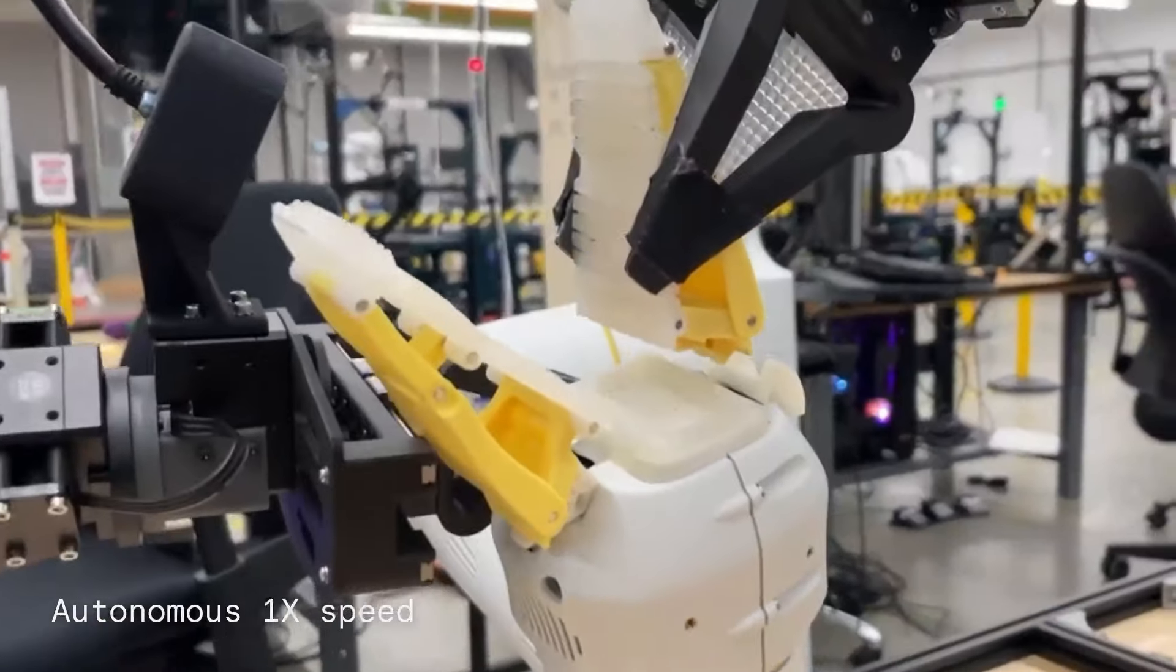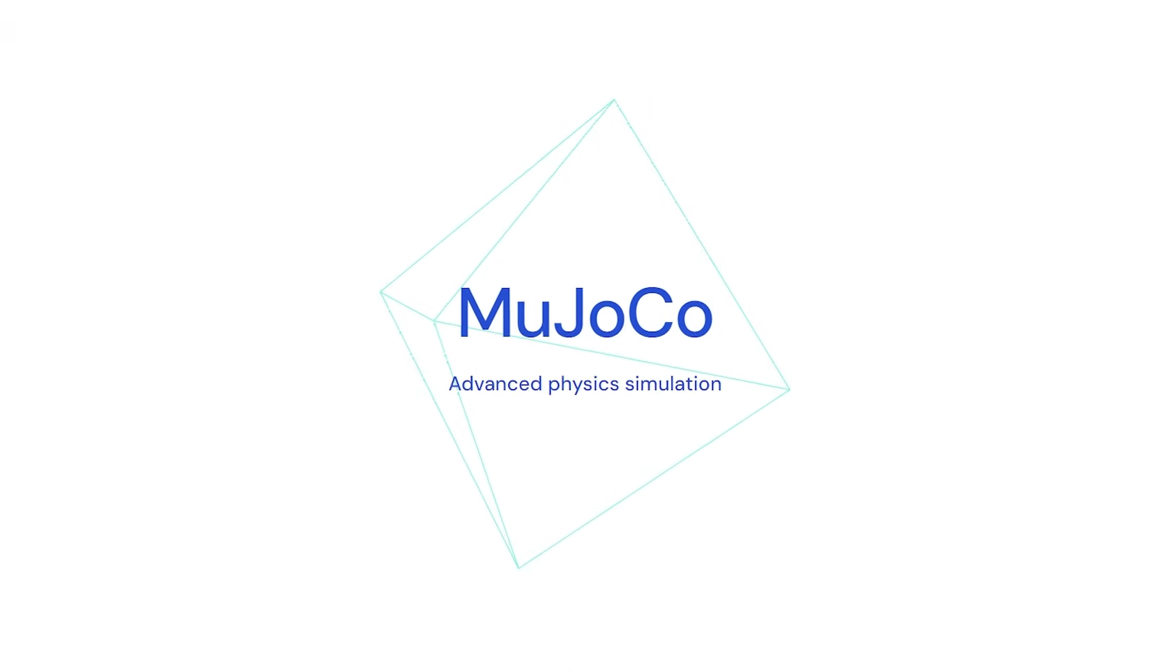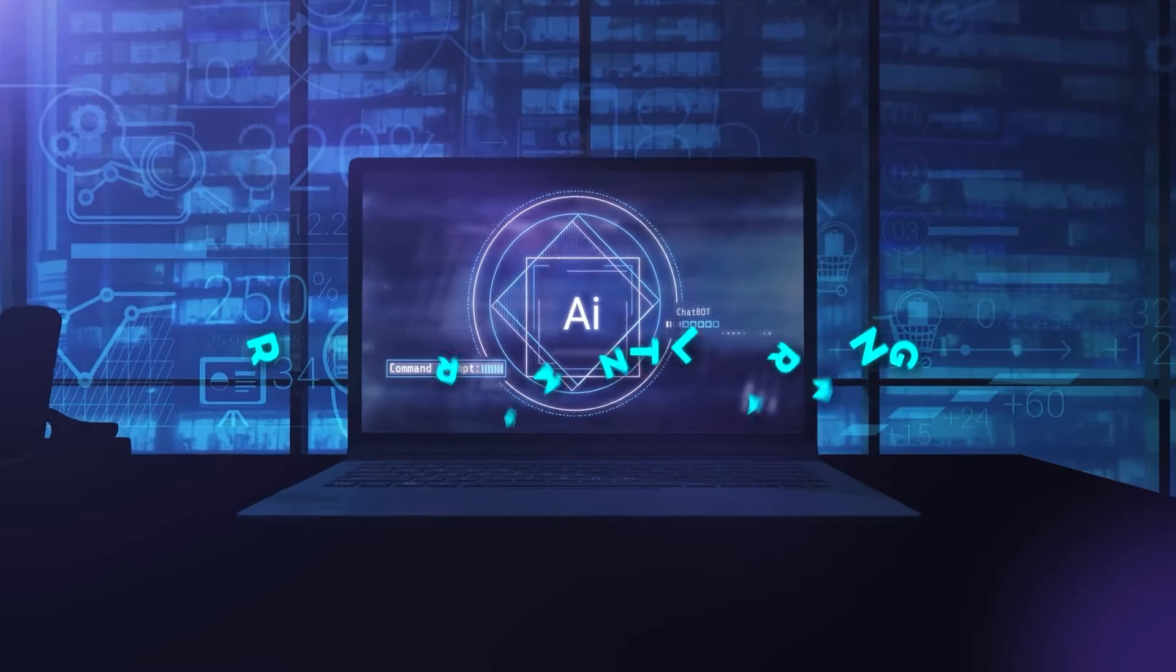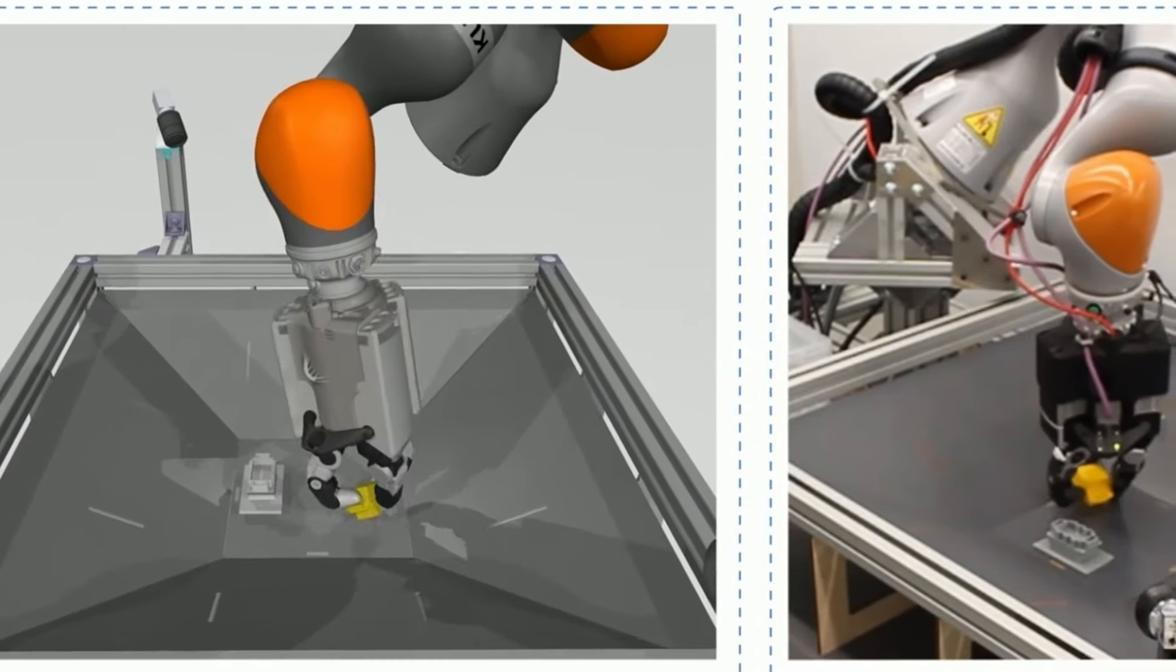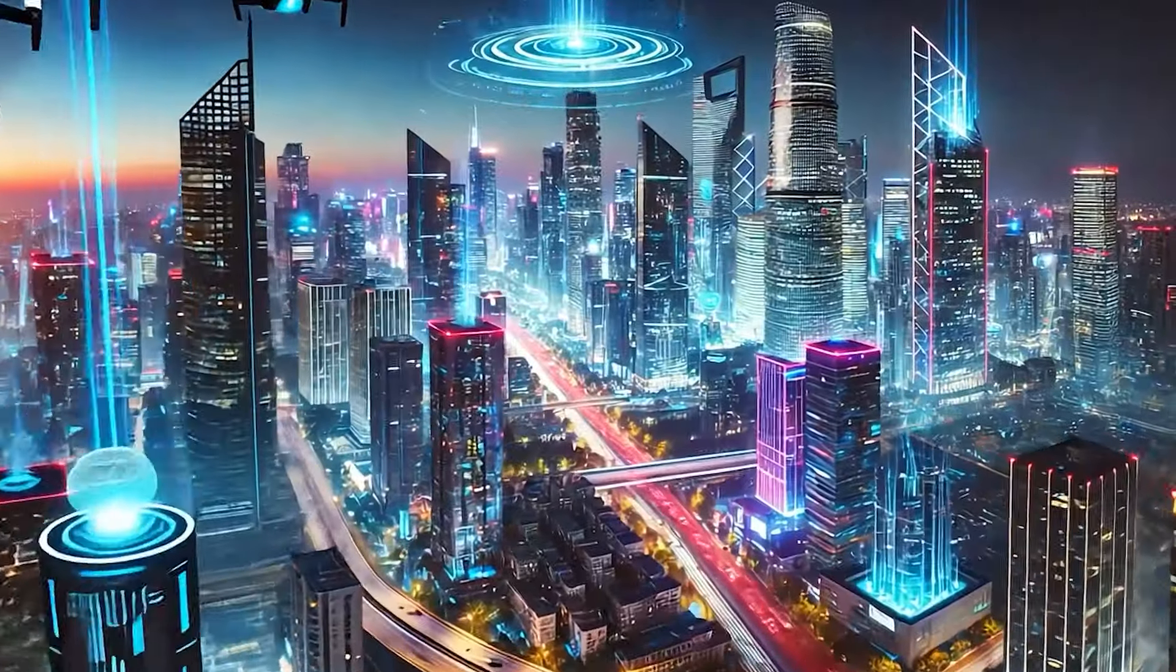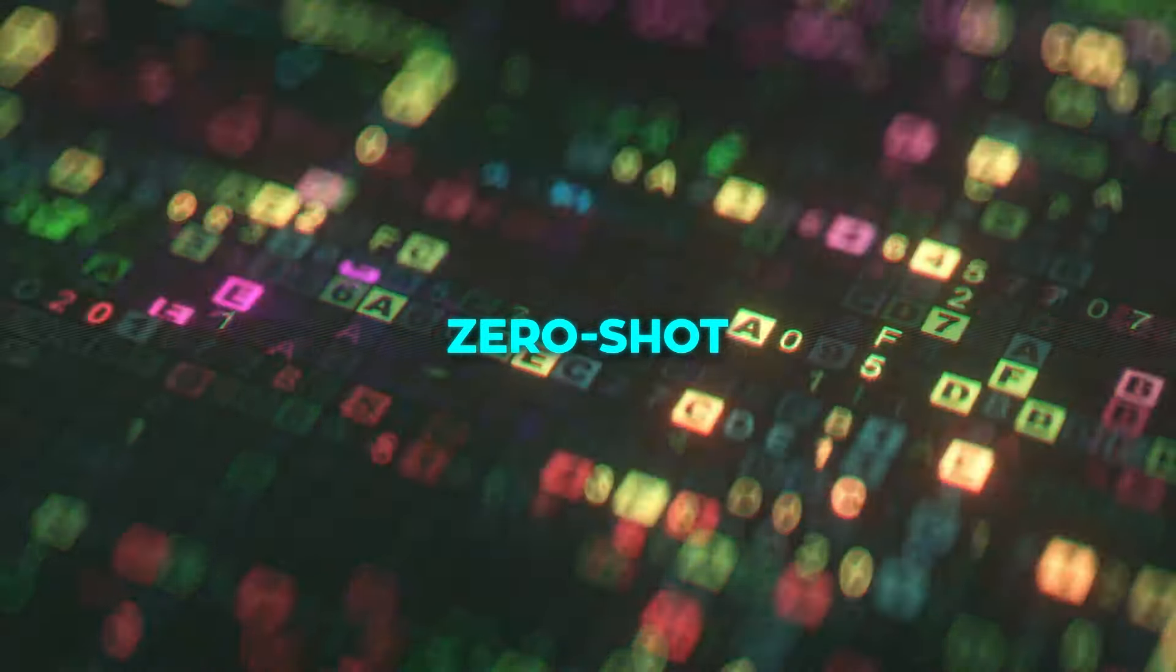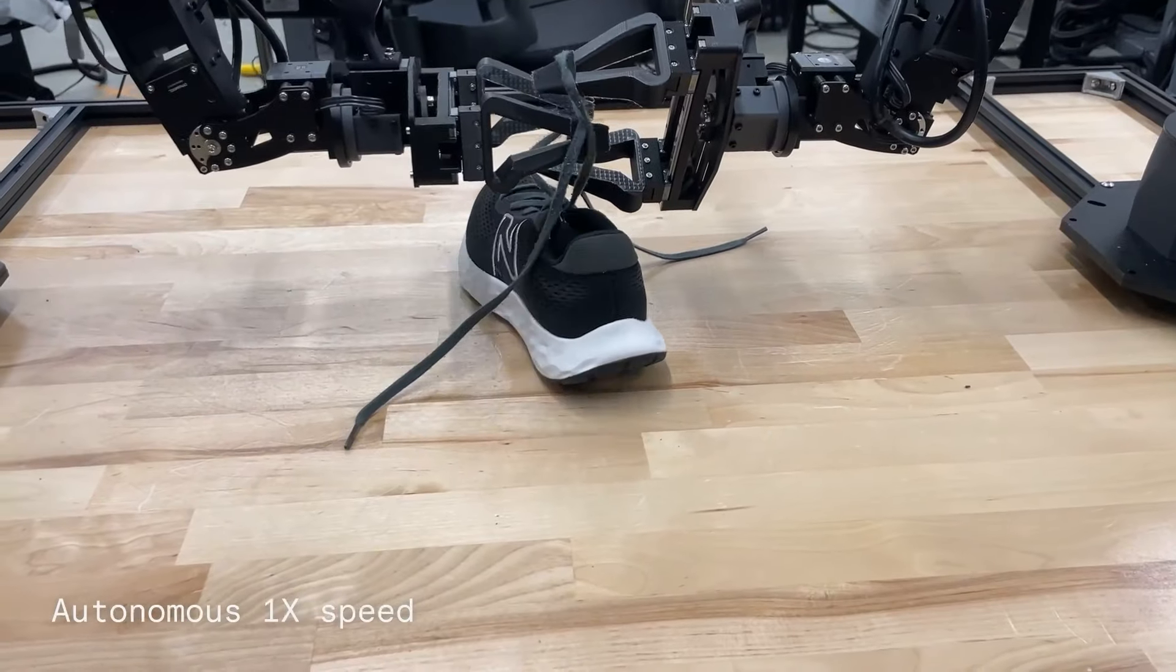The physics simulator Mujoco plays a pivotal role in Demostart's training process, allowing for accurate modeling of real-world physics. Combined with reinforcement learning techniques, this enables Demostart to bridge the sim-to-real gap, meaning that what the robot learns in a virtual environment can be applied in the physical world with minimal retraining. This near-zero-shot transfer is a massive leap forward, drastically reducing the time and cost needed to deploy these robots in real-world settings.